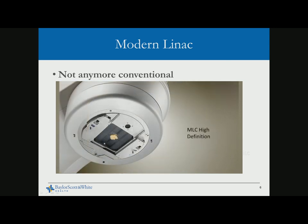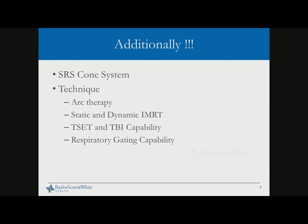If you have a radiosurgery system with a cone system, we need to be able to accept that. There is also technique-specific acceptance testing: if the vendor promises the LINAC can deliver a certain technology, we need to verify that at acceptance testing. Most of these tests are currently done in a functional way because no dosimetric data is collected and the planning system is not ready to assess dosimetric validity during acceptance testing.